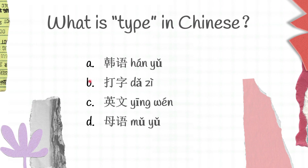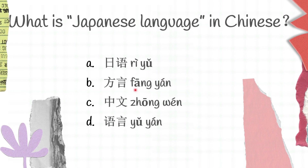答字 is type. 英文 is English. 母语 is mother tongue. English in Chinese — we have A 日语, B 方言, C 中文, D 语言. I will explain it later. 日语 is Japanese language, 方言 is dialect, 中文 is Chinese language, 语言 is language. Japanese language in Chinese is A — 日语.